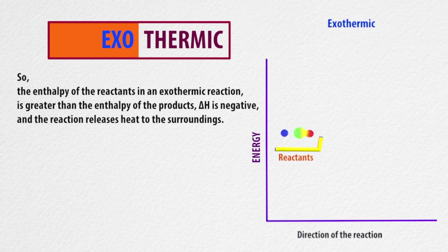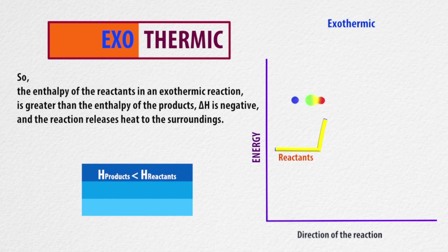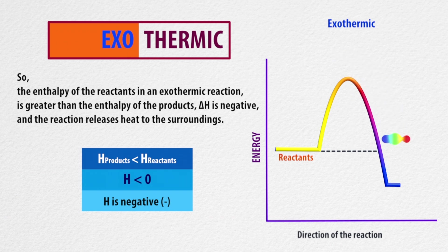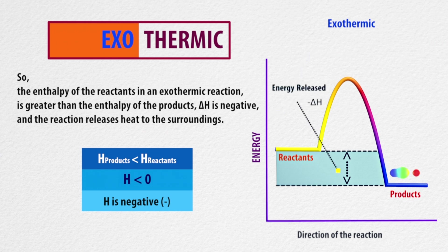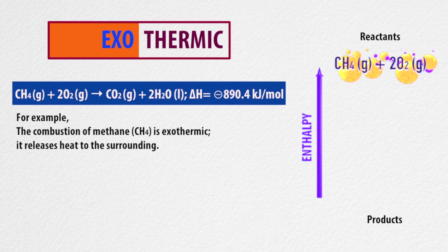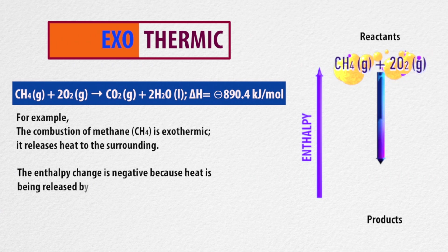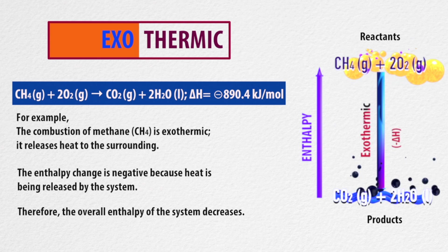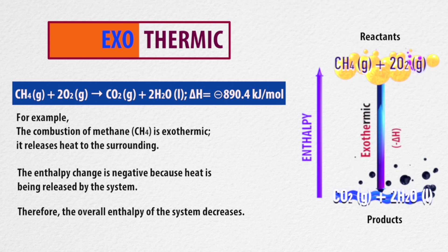The enthalpy of the reactants in an exothermic reaction is greater than the enthalpy of the products. Delta H is negative, and the reaction releases heat to the surroundings, so the enthalpy of products is less than enthalpy of reactants. For example, the combustion of methane is exothermic — it releases heat to the surroundings. The enthalpy change is negative because heat is being released by the system, and therefore the overall enthalpy of the system decreases.